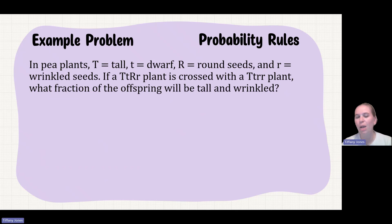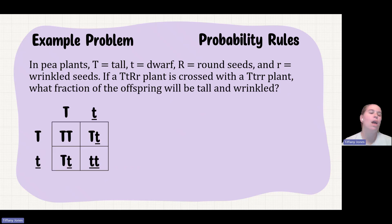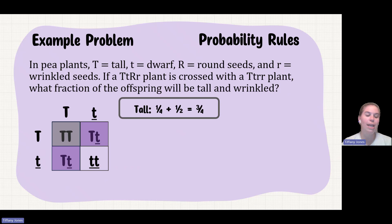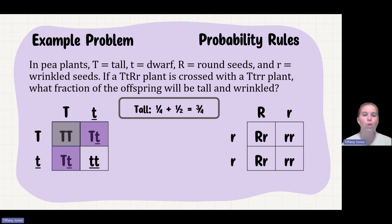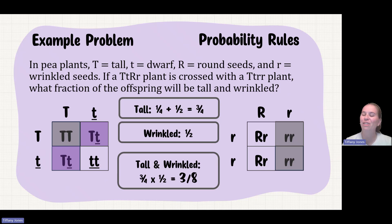Pause the video and try this problem on your own. In pea plants, tall is capital T, dwarf is lowercase t, round seeds are capital R, and wrinkled seeds are lowercase r. If a dihybrid plant heterozygous for tall crosses with a plant that is heterozygous for tall and homozygous recessive for wrinkled, what fraction of the offspring are tall and wrinkled? Crossing the heterozygotes for tall gives three-fourths tall. Crossing heterozygous round with homozygous recessive wrinkled gives one-half wrinkled. So three-fourths times one-half gives three-eighths.